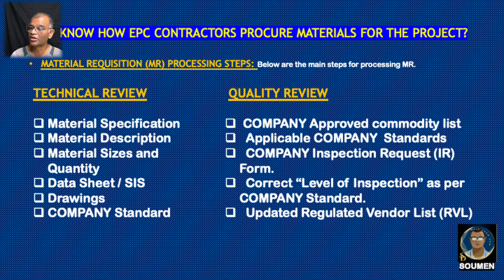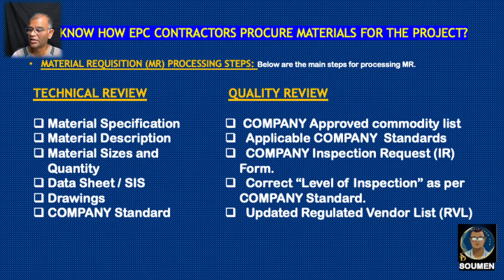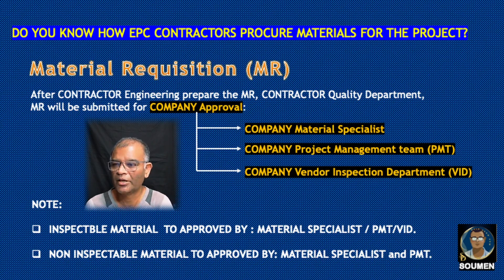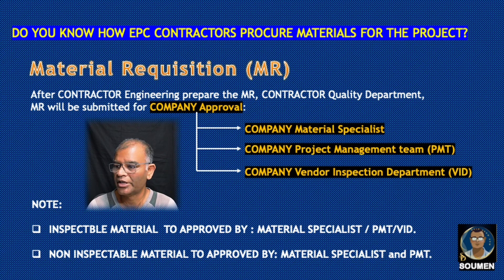Quality staff will review the company-approved commodity list — the material we are ordering must match specifications from that list, and applicable company standards must be complied with. The correct level of inspection must be selected as per company standards using the inspection request form. The updated regulated vendor list must be verified — are the materials selected from the company's updated regulated vendor list? The MR requisition goes through company approval: first to the company material specialist, then to the company Project Management Team (PMT), and final approval comes from the Vendor Inspection Department (VID).